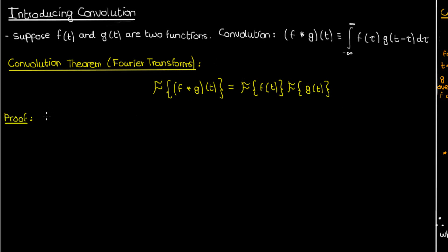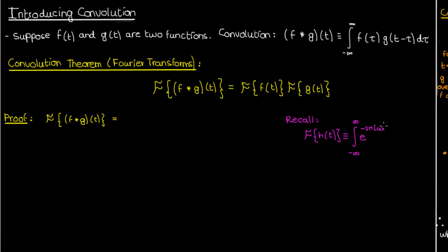We'll begin the proof by writing the expression for the Fourier transform of the convolution. We'll evaluate the Fourier transform of the convolution, do some algebra, and show that it equals the product of the Fourier transforms. Recall that the Fourier transform of a function h is the integral from negative infinity to infinity of the exponential of negative 2 pi i — where i is the imaginary number — times omega, the variable we're transforming into, times t, times h of t dt. We can then write the Fourier transform of the convolution of f and g using the definition of convolution.